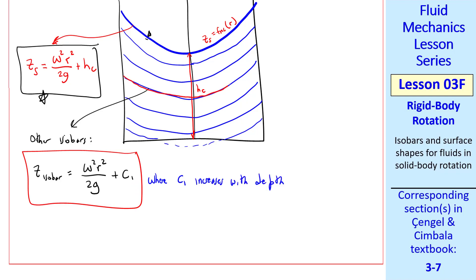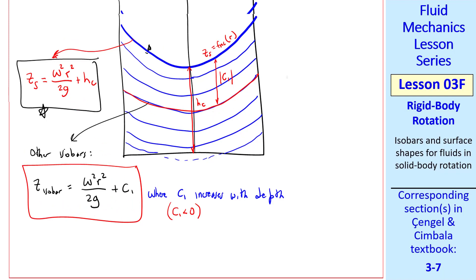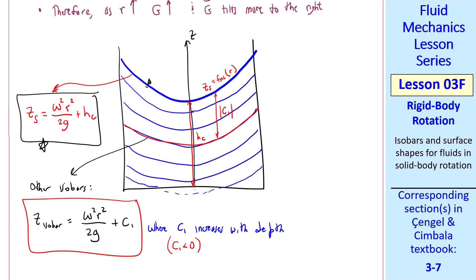For this particular isobar, for example, this elevation would be the magnitude of c1. c1 itself is a negative number. It's the depth from the free surface to the particular isobar in question, but it's a negative value so that z of the isobar is lower than z of the surface, as it must be. So to solve these types of problems, if we know the radius of the container, and we know the angular velocity omega rotating about the z-axis, we can calculate the shape of all of these isobars.